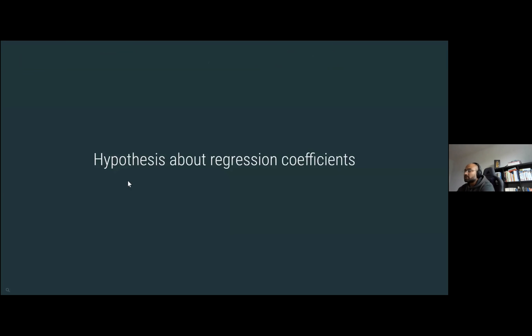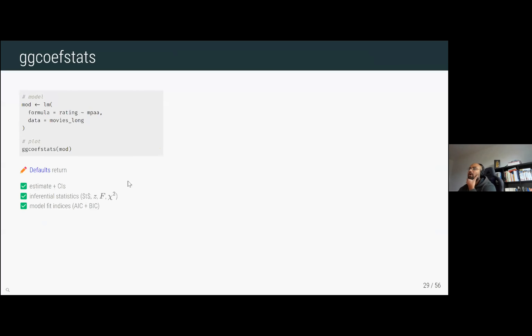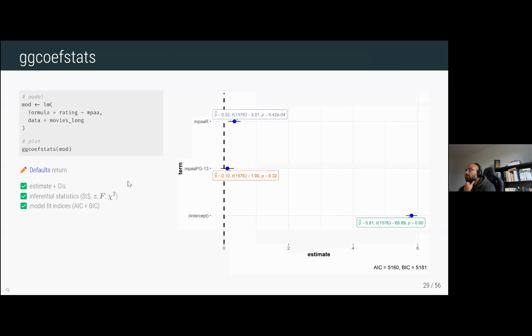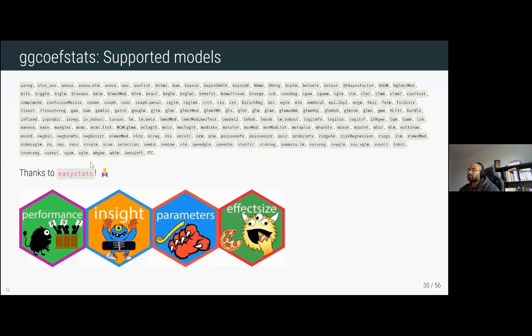The most general kind of hypothesis testing is about regression coefficients, and for that the package provides gg_coefficient_stats. You define a model and feed it into the function, and it creates a dot-and-whisker plot. By default you get the estimate and its uncertainty, inferential statistics in the label, and model fit indices — helpful if you have multiple models to compare. The list of supported models is quite large — most common regression models are supported, thanks to the easystats ecosystem of packages.